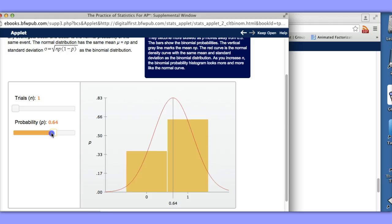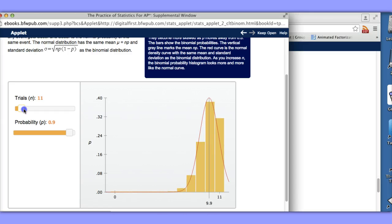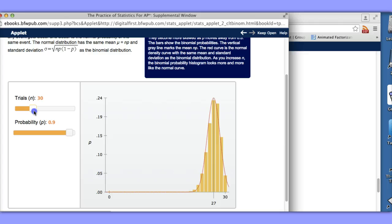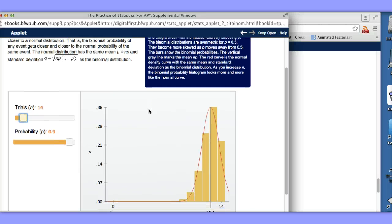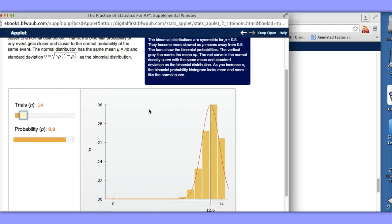This one is talking about when the distribution would be normal. Clearly this is skewed and as we add more and more trials we can see that the distribution becomes more and more normal. And so you can talk about the conditions for using a binomial distribution, excuse me, using a normal distribution to approximate a binomial distribution.